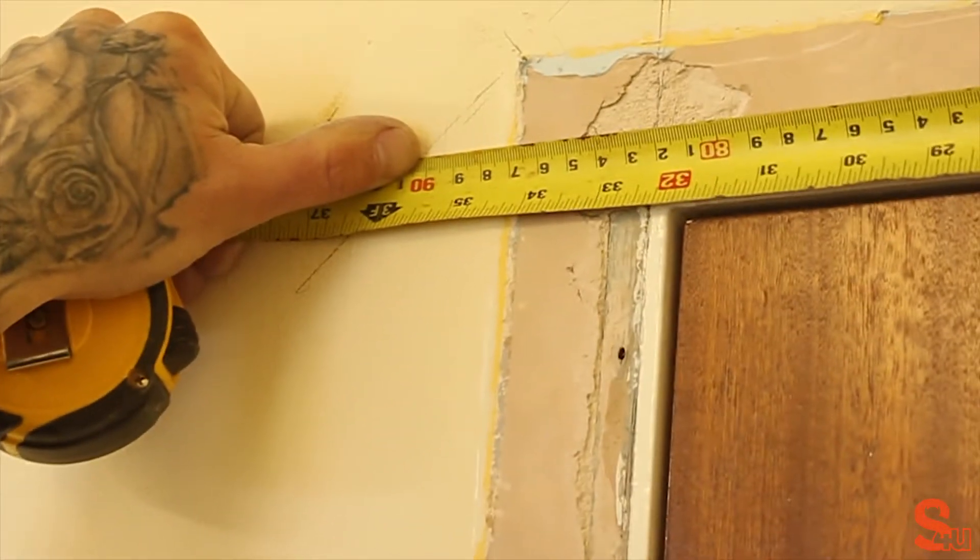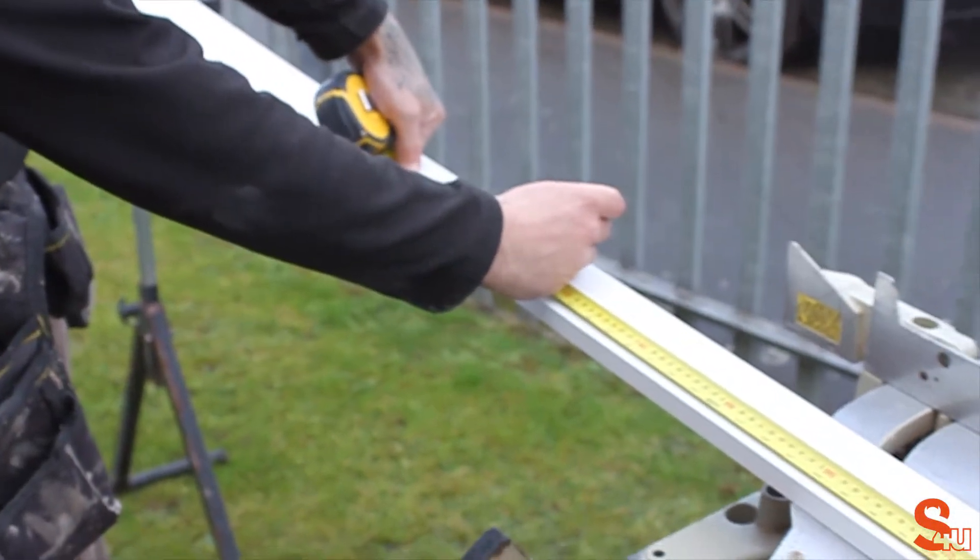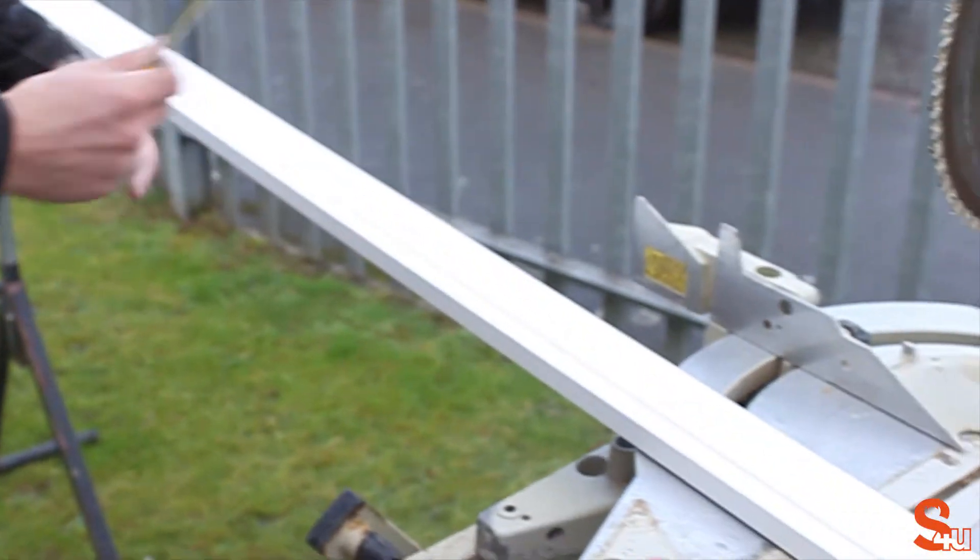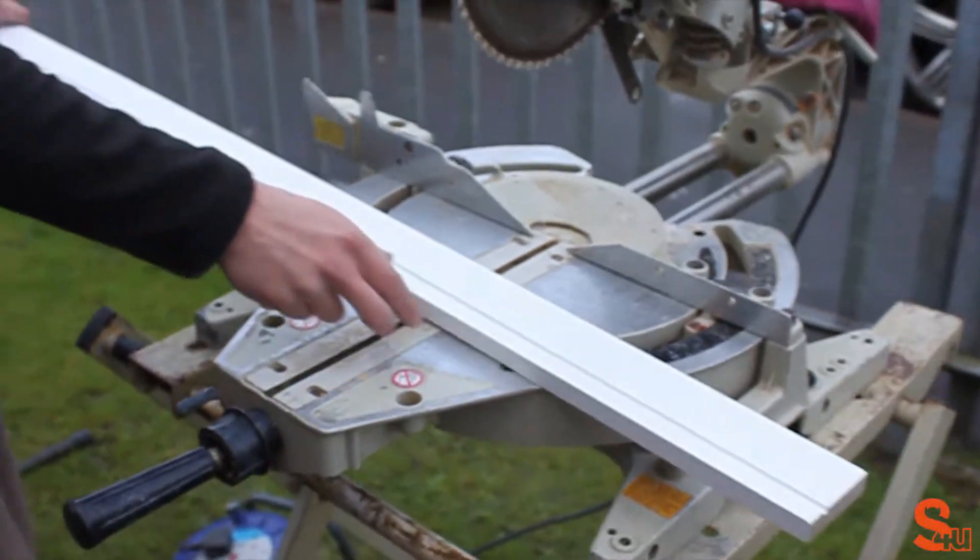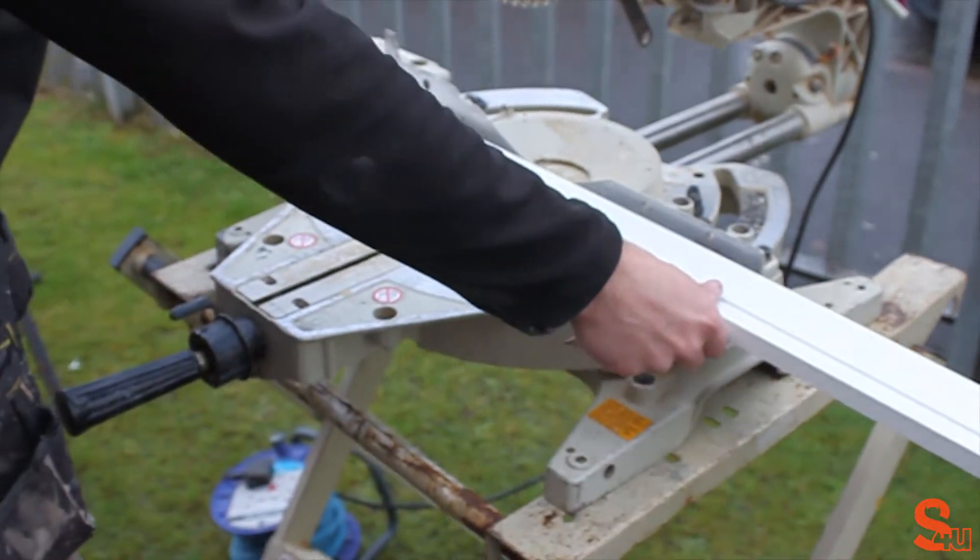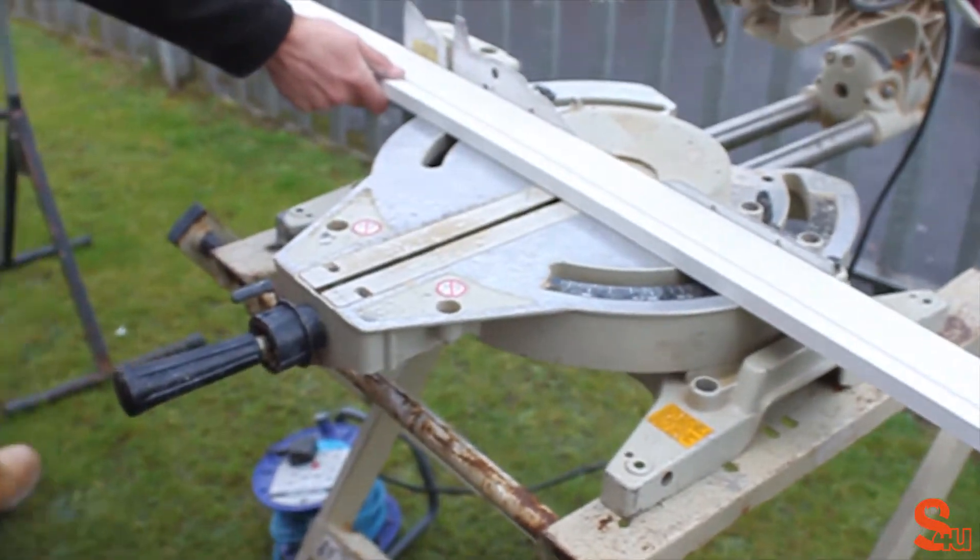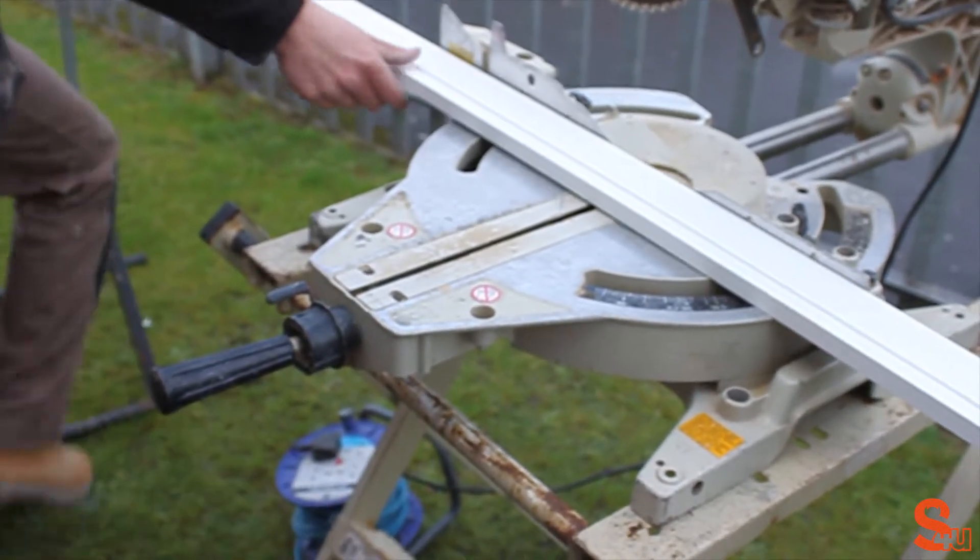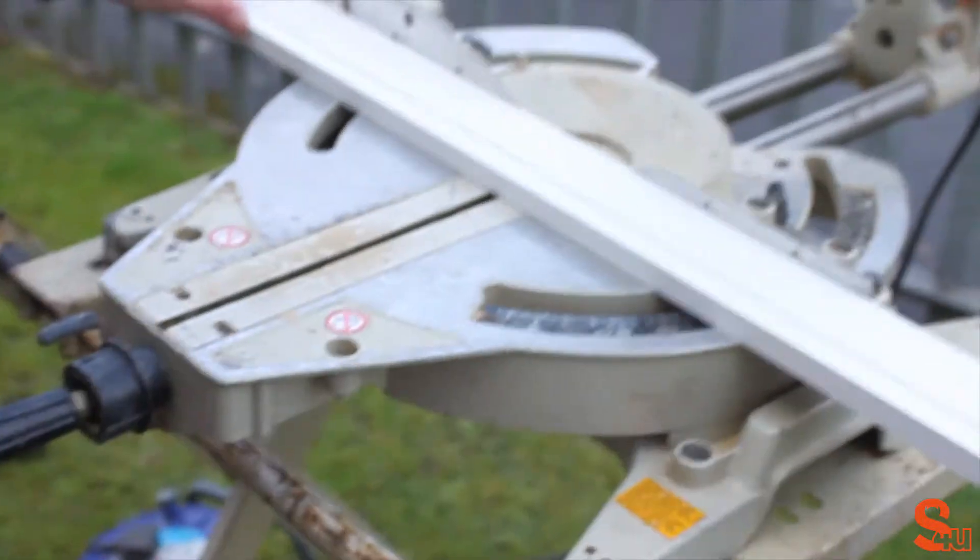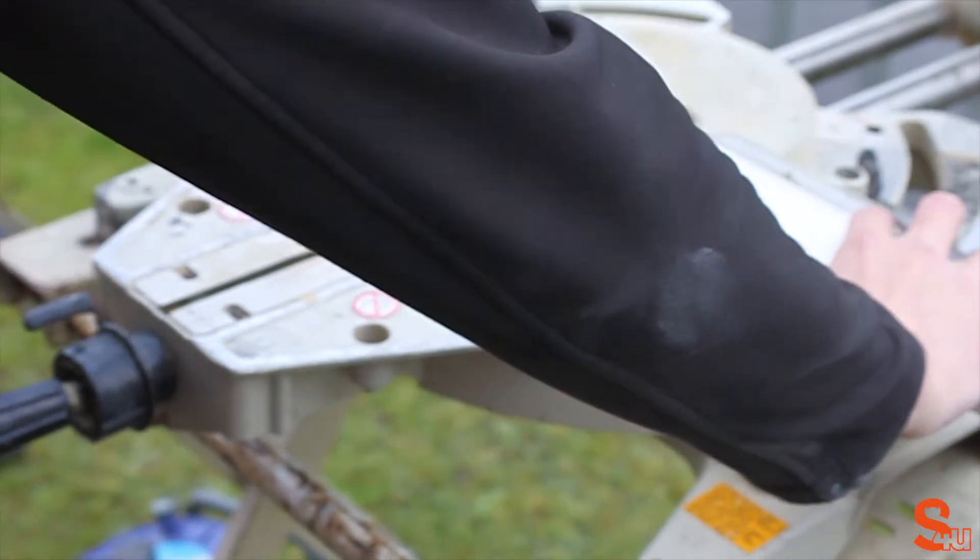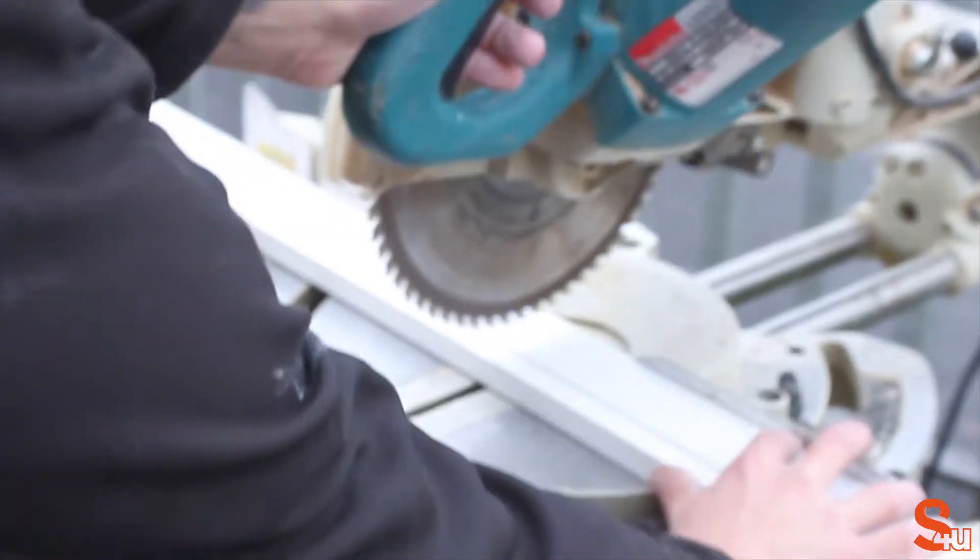Then we need to work out the second piece, the header piece. We just marked out kind of a rough piece that we can cut off from a full length so it's easier to work with. You could be more exact if you had less architrave to work with.